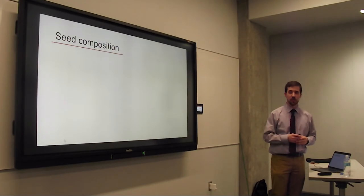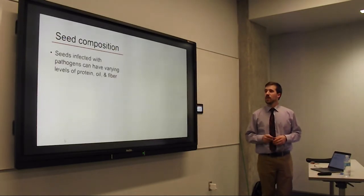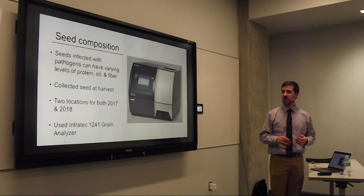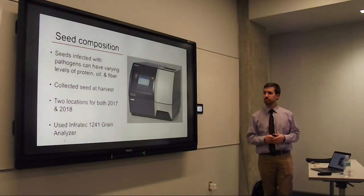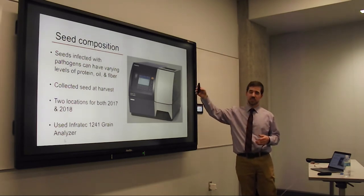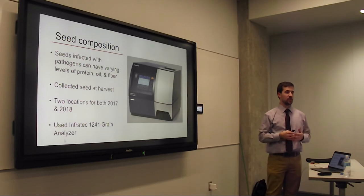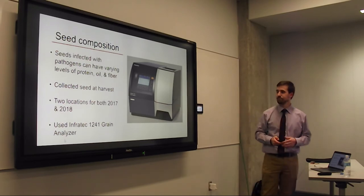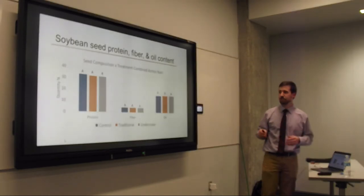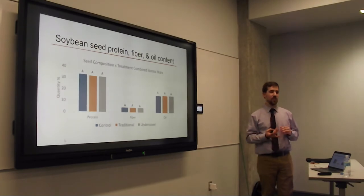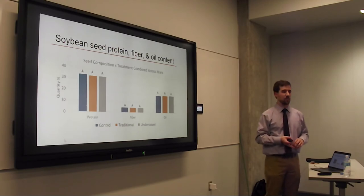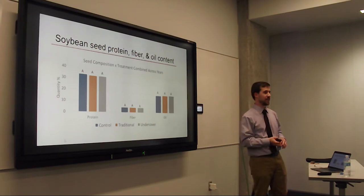The last thing I looked at was seed composition. Seeds infected with pathogens can have varying levels of protein, oil, and fiber. I collected 500 seeds, placed them in a machine that takes subsamples and shoots light through them to detect levels of each component. Combining results across years, the values were almost always the same: protein right at 34%, fiber right at 5%, and oil right at 19%.